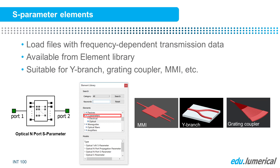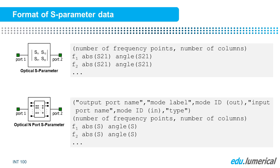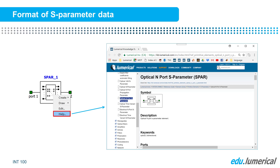Examples of components that you may want to represent using S-parameter elements include Y-branches and multi-mode interference. The format of the data stored in the S-parameter files depends on the particular element being used, as there are different S-parameter elements available for varying numbers of ports, for time variant S-parameters, and so on. A page with a summary of the S-parameter file formats is linked below this video. You can also find details about the file format for each S-parameter element in the documentation of that element.